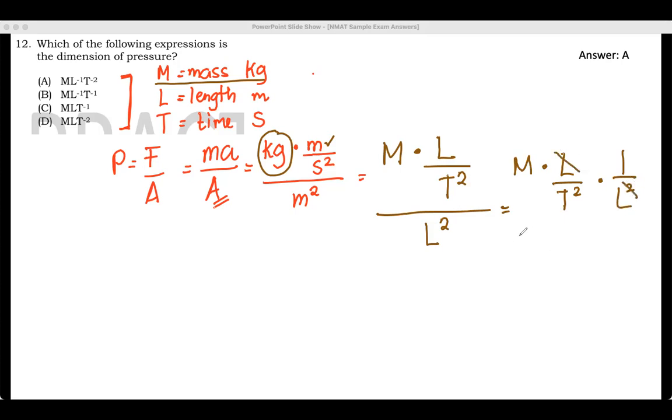This will cancel out. We will have M divided by T squared L. Or simply, I think they write this in a negative exponent, negative 2, then L negative 1. Let's see if we have that.